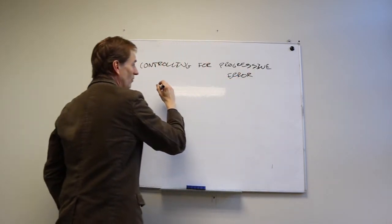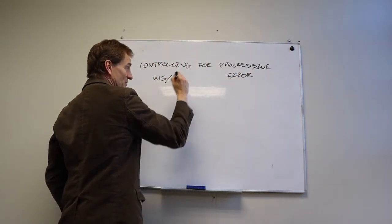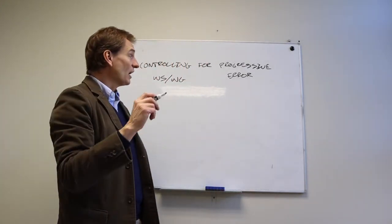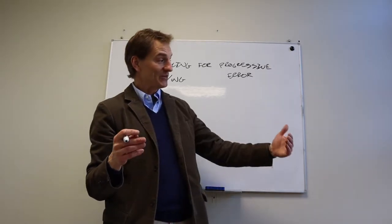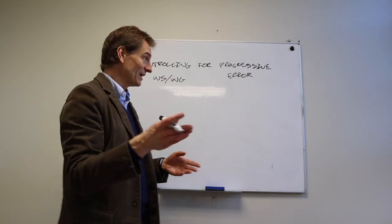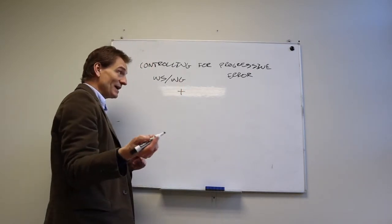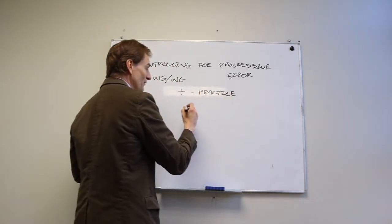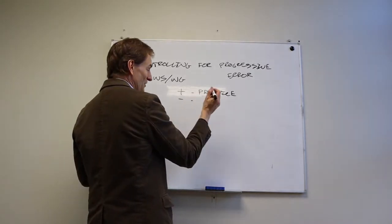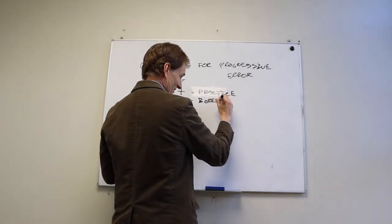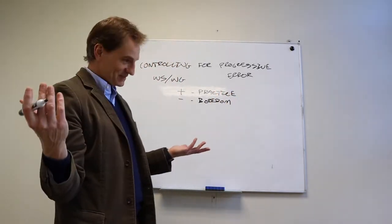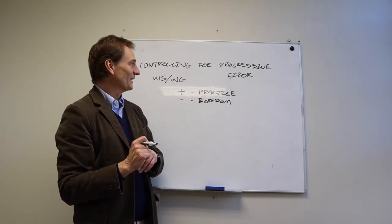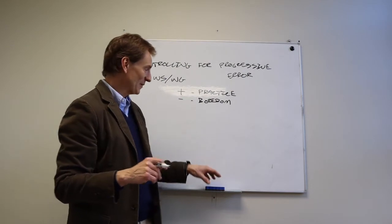And this is a problem in within subjects, within groups designs, because every person is in every possible condition. And so what progressive error is, is as you progress through the study, maybe your behavior gets better, maybe it gets worse. If it gets better, that's positive progressive error, and that's due to a practice effect. If it gets worse, then that is usually fatigue or boredom. So how do we control for progressive error?